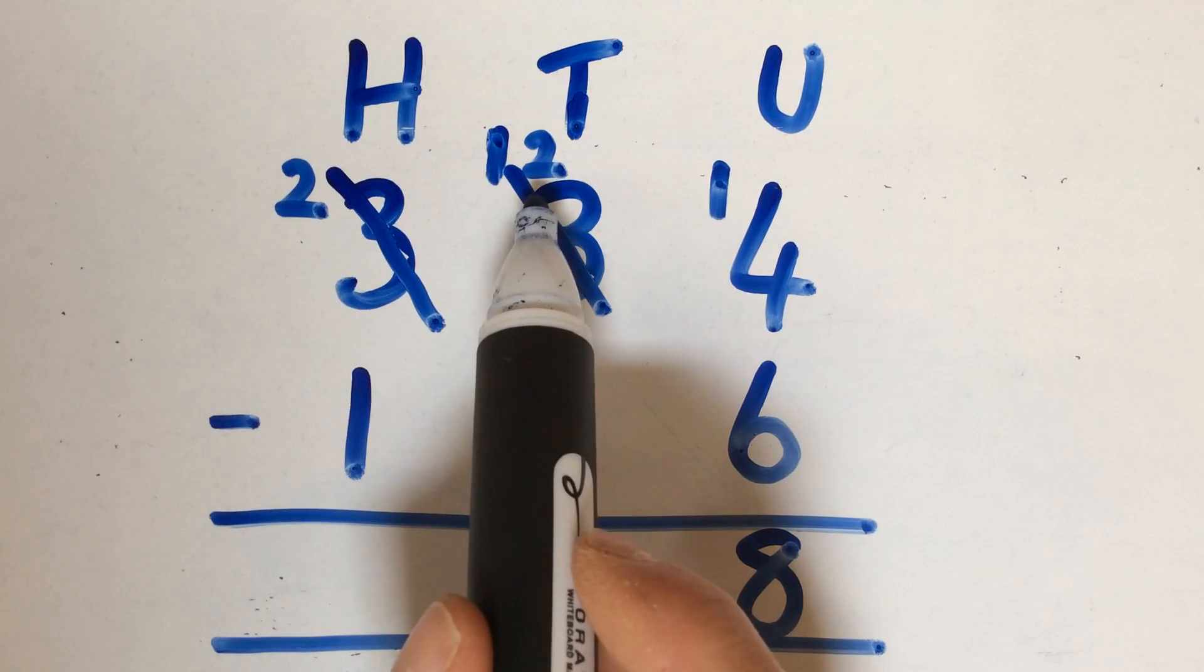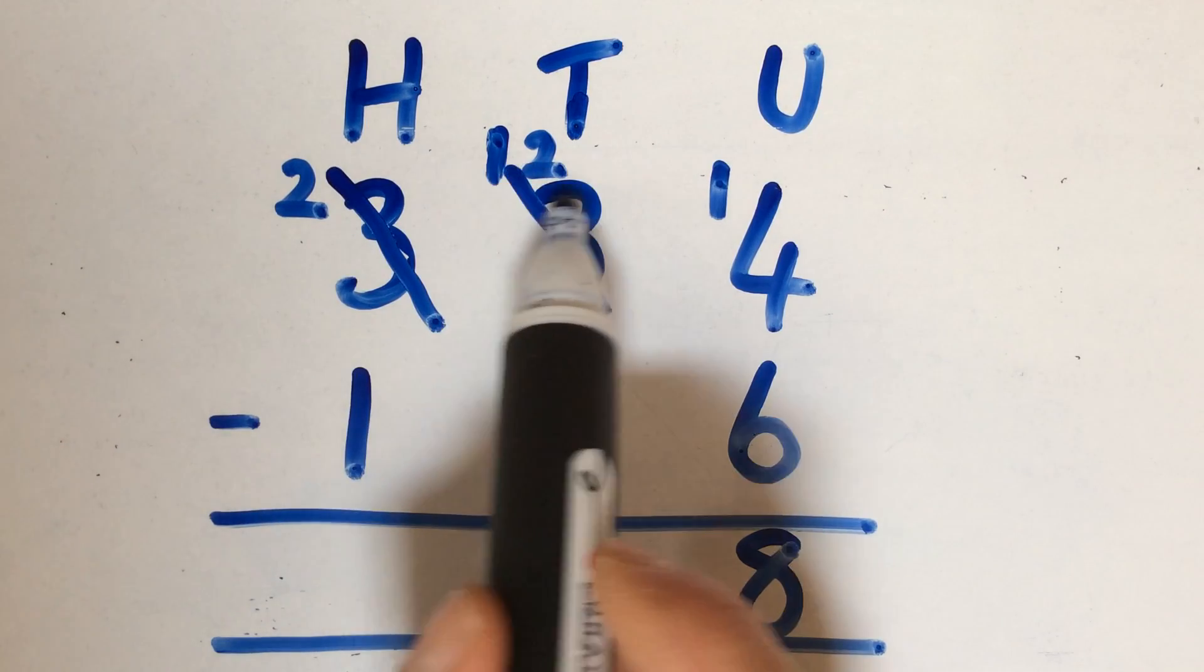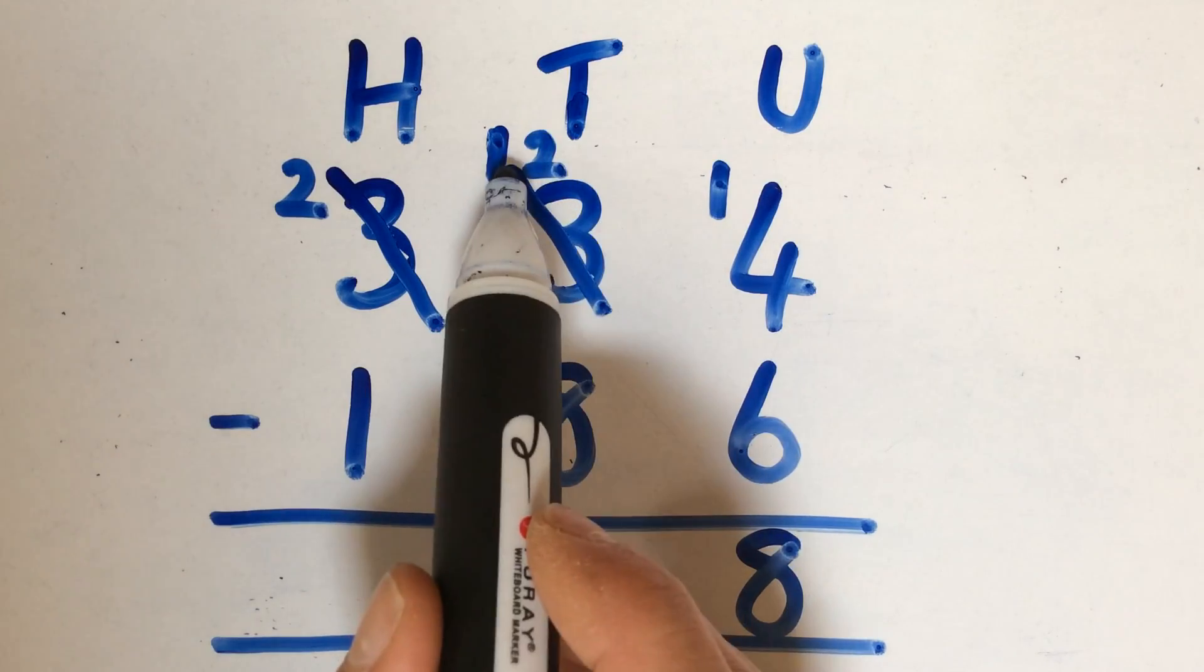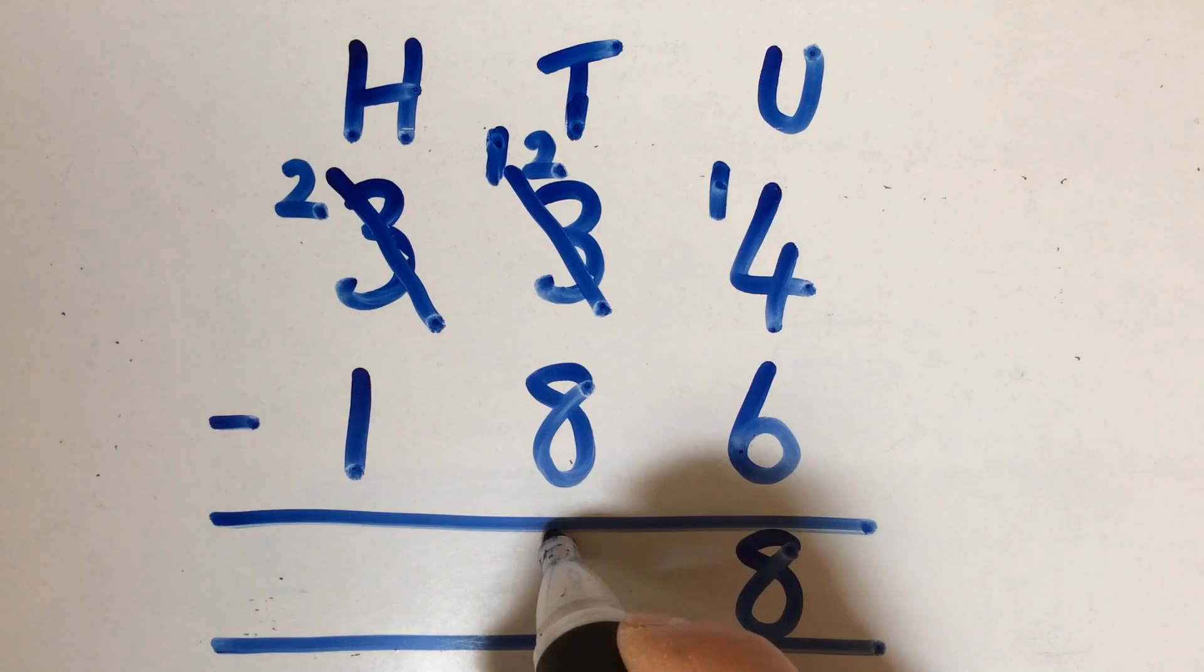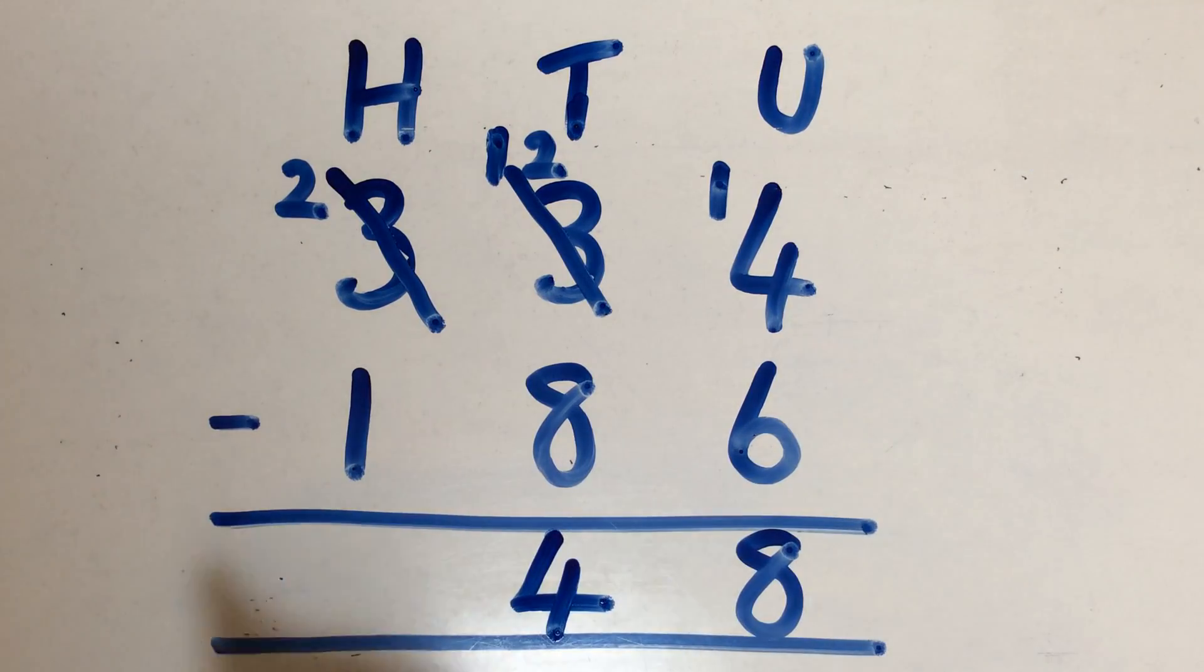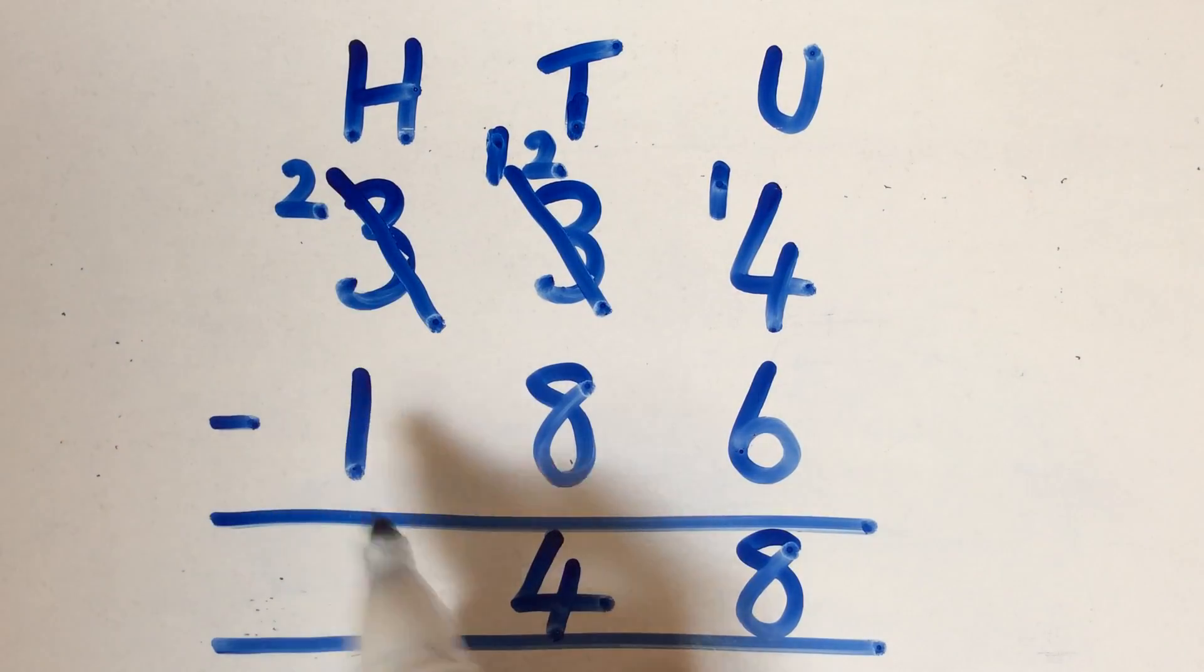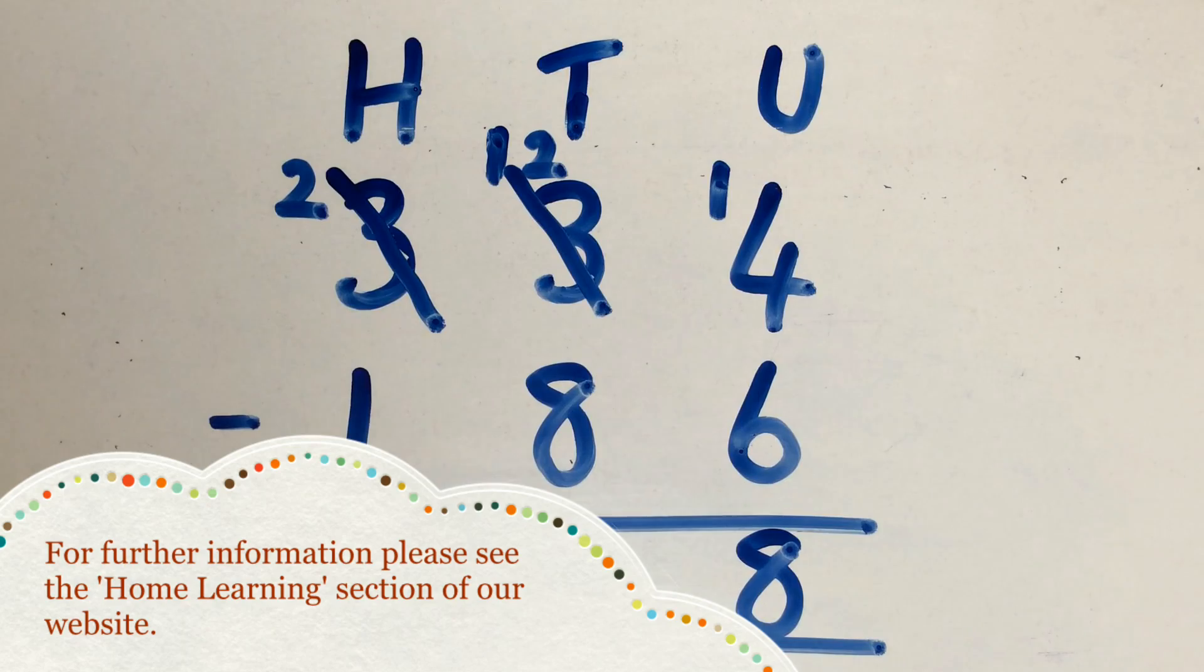So you've got 12 lots of 10 take away 8 lots of 10, which gives you 4 lots of 10 altogether, and then 200 take away 100, which is 100.